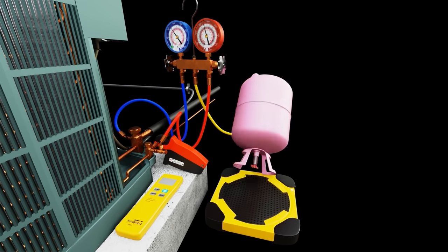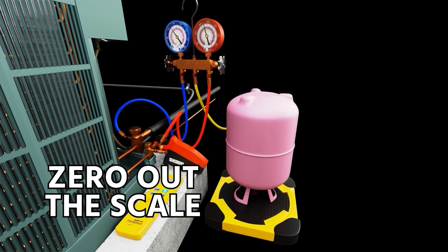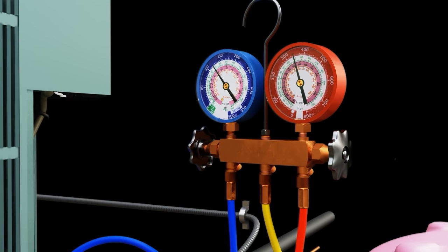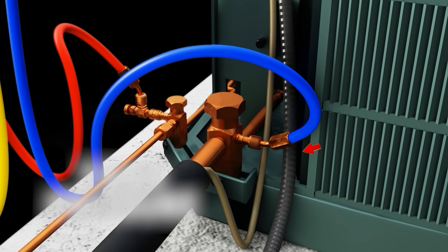We invert the tank onto a scale. We make sure that the scale is zeroed out. So that way we can see exactly how much refrigerant we're adding to the system. We then open our manifold handle or valve by turning it counterclockwise, which allows refrigerant to flow up the yellow hose, down through the blue hose and into our suction line, which is the low pressure side.